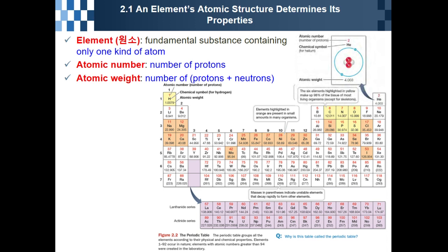We need to know two important concepts: atomic number and atomic weight. For example, helium's atomic number is two, meaning it has two protons. Atomic number means the number of protons. The atomic weight, shown at the bottom of each element in the periodic table, is the number of protons plus neutrons. Because helium has two protons and two neutrons, its atomic weight is four.